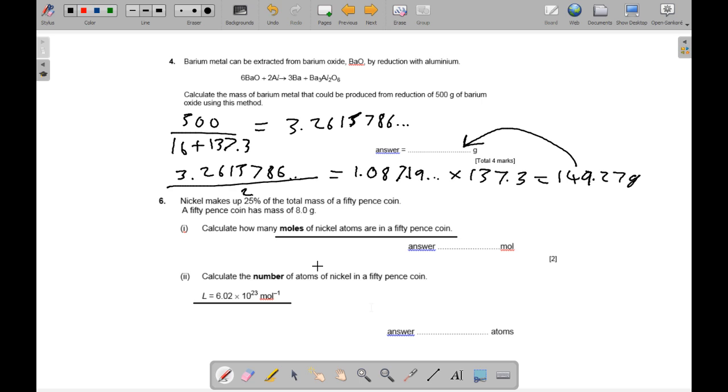2 over 58.7, that gives us 0.0340.7. So that's 0.034 moles, and times that by Avogadro's constant, and that gives you 2.0511 times 10 to the 22 atoms.